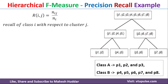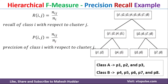The recall equation is: R_ij equals N_ij divided by N_i. N_ij is the number of objects of class i present in cluster j, and N_i is the number of objects present in class i. Similarly, the precision formula is: Precision of ij equals N_ij divided by N_j, where N_j is the number of objects present in cluster j.